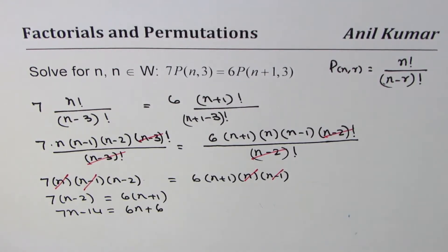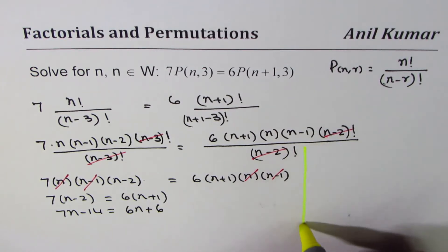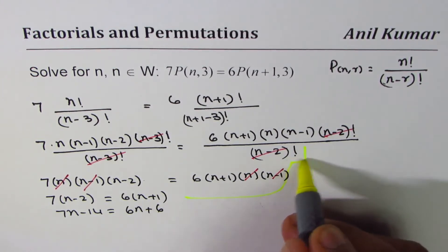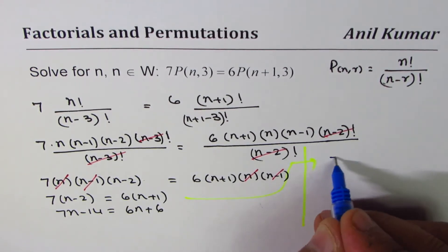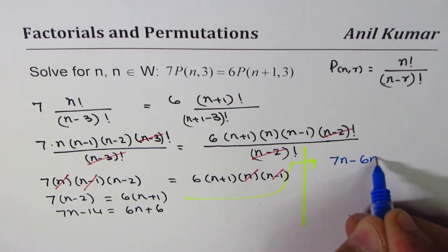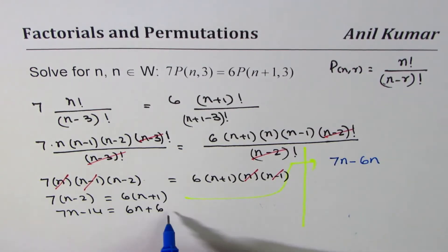Let's take terms to their respective sides. We'll move 6n to the left side, so 7n minus 6n, and 14 to the other side, giving us n equals 6 plus 14.